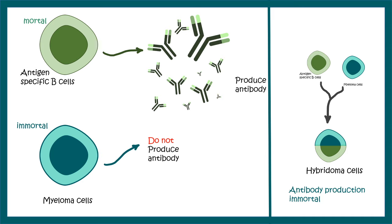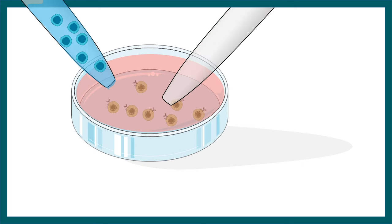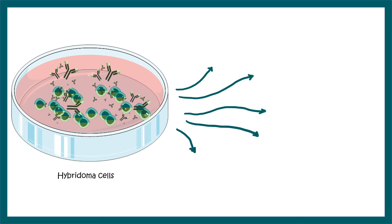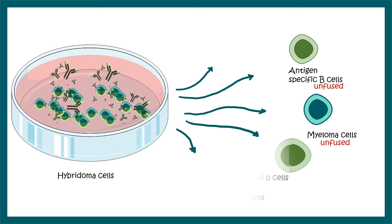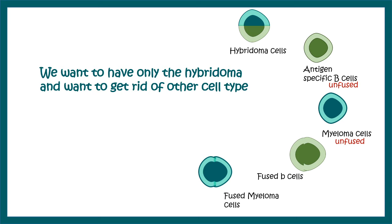However, there are important details to understand. When we try to fuse B cells with myeloma cells to generate hybridoma, quite a lot of cell types will be present in the culture. These include: antigen-specific B cells in an unfused state, myeloma cells in an unfused state, fused B cells, fused myeloma cells, and hybridoma cells, which are our cell type of interest. We need only hybridoma cells and must get rid of the others.